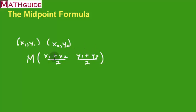When we add the x values and divide by two, that is the x value of our midpoint. When we add the y values and divide by two, that answer will be the y value of our midpoint. That's what the midpoint formula is.